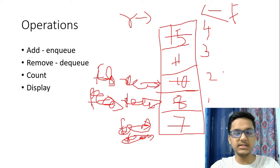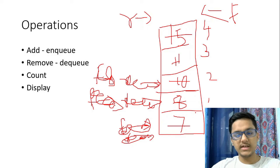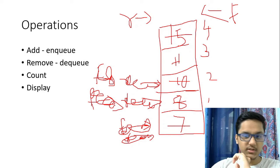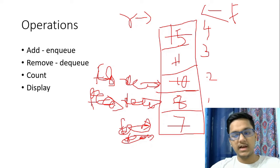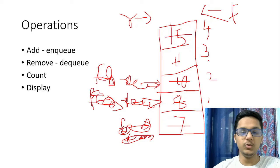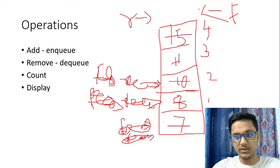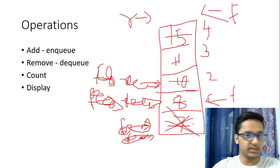One disadvantage you can see in this queue is that there's a wastage of memory. Whatever element is added and then removed by the front pointer, you can't go back. Unlike a stack where you can go back and forth, in a queue you can't decrement the front or rear pointer — once it's increased, it's increased. So if the front pointer moves past the zeroth index, that memory is wasted forever because you can never add anything there again.